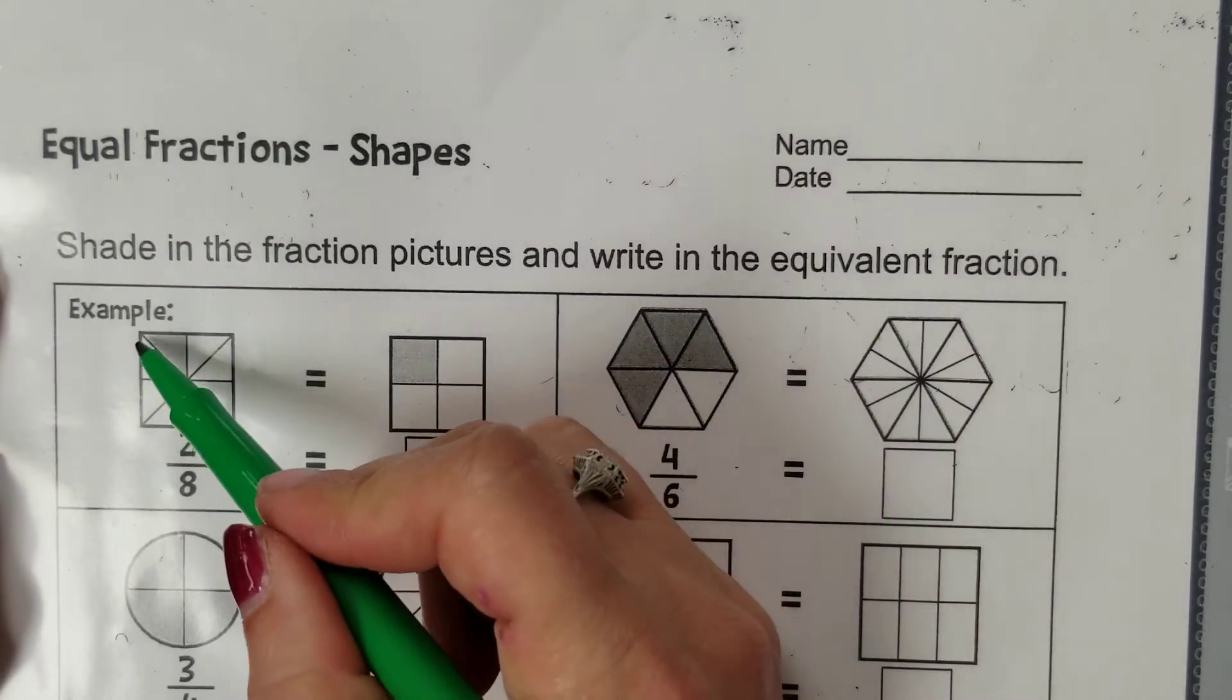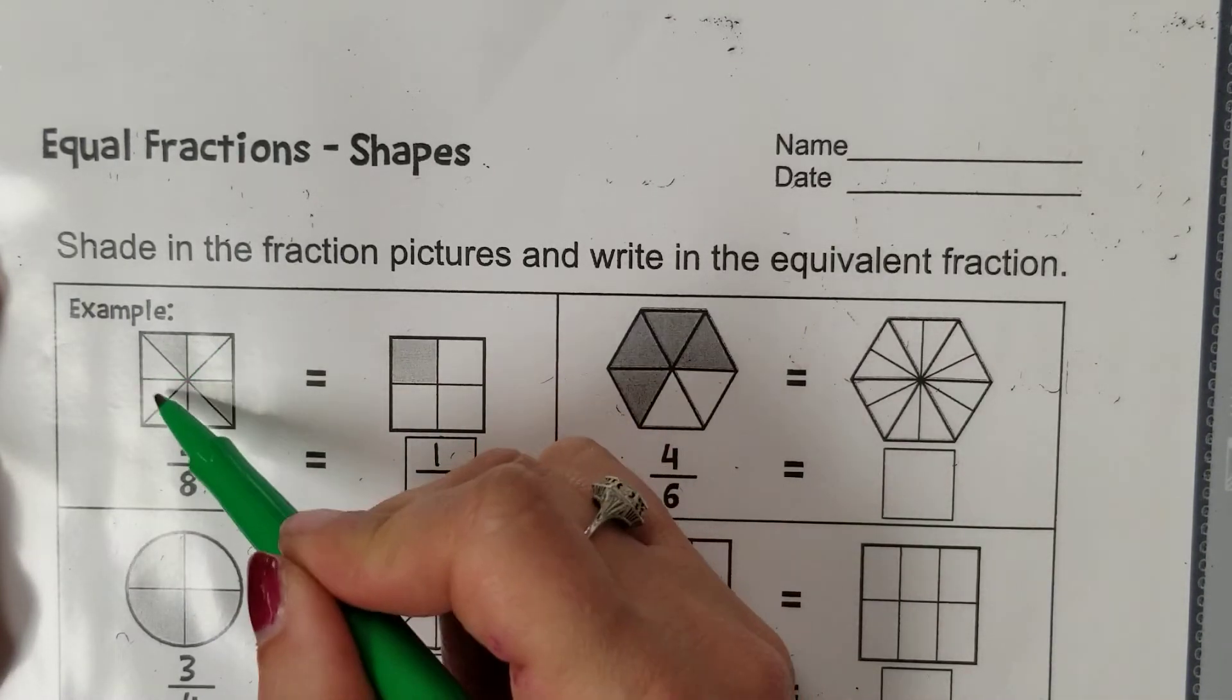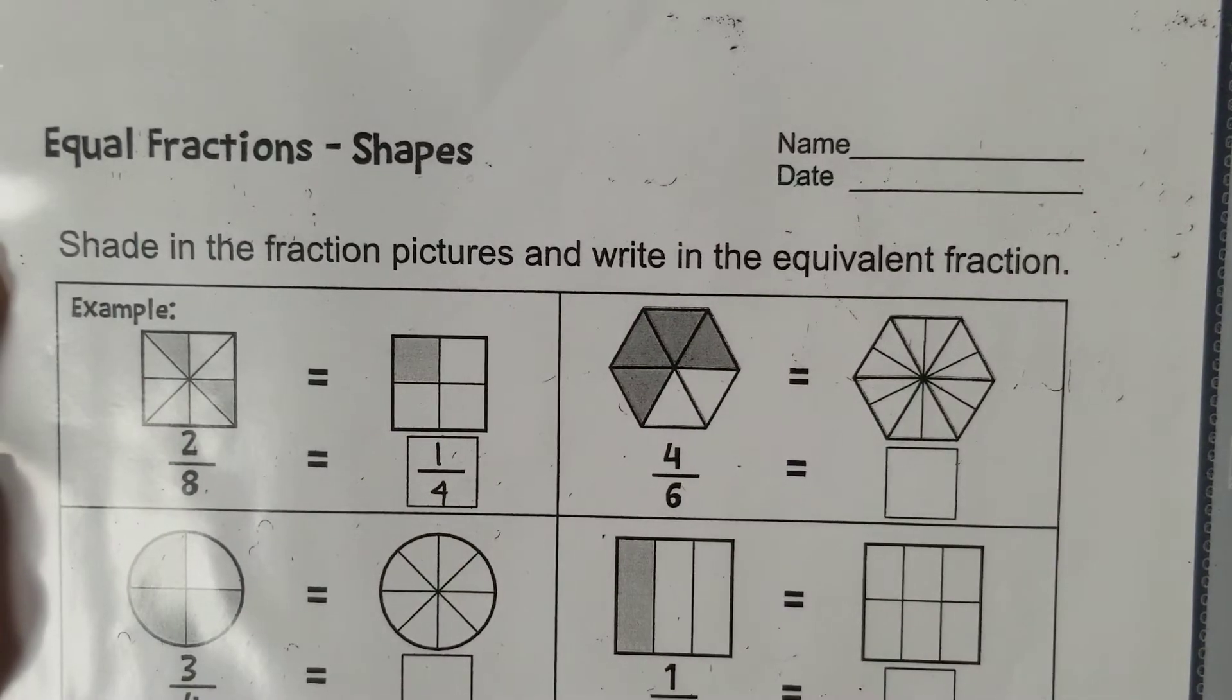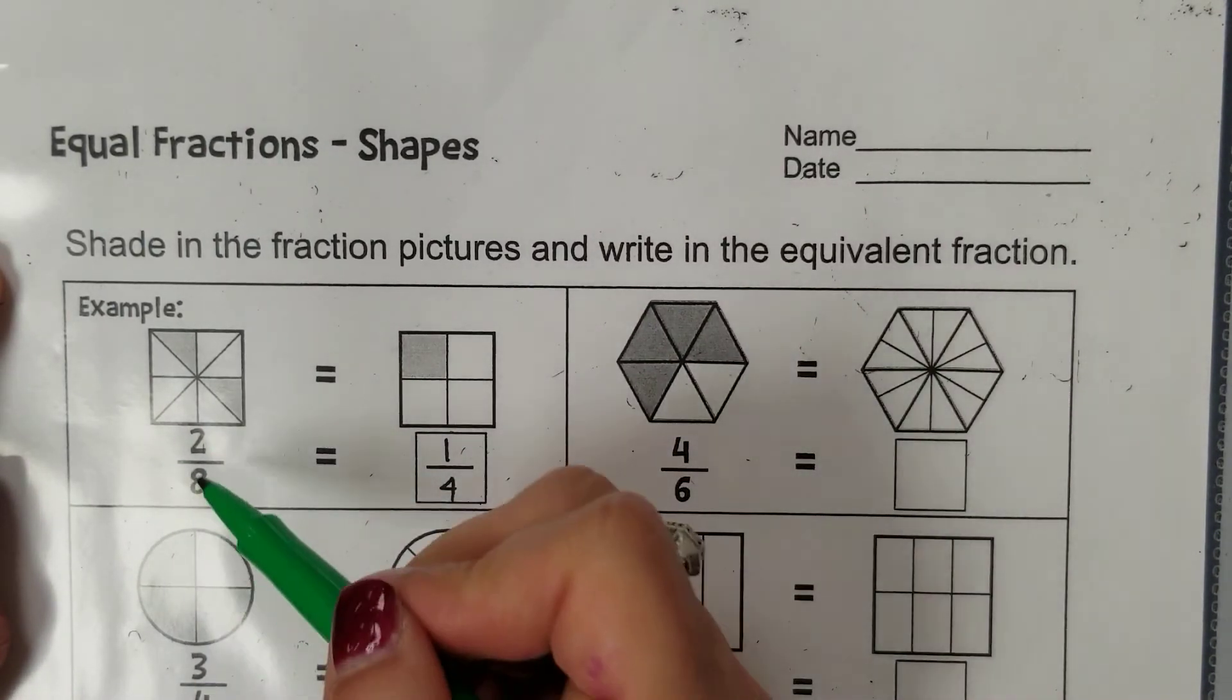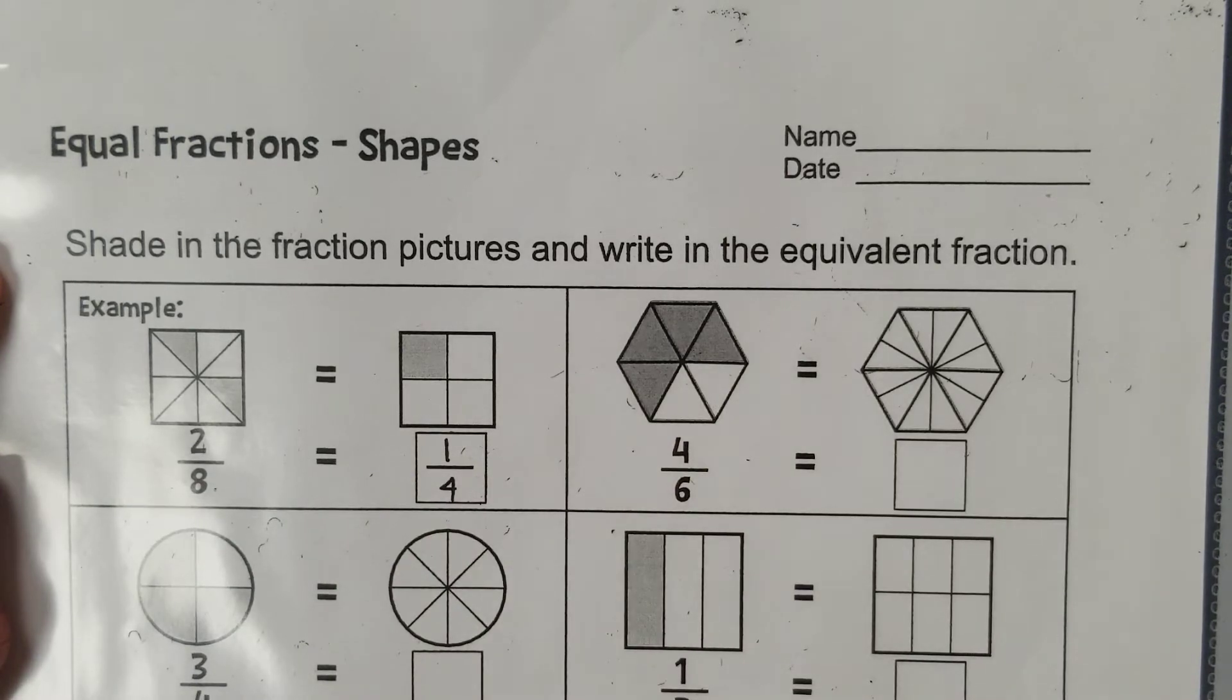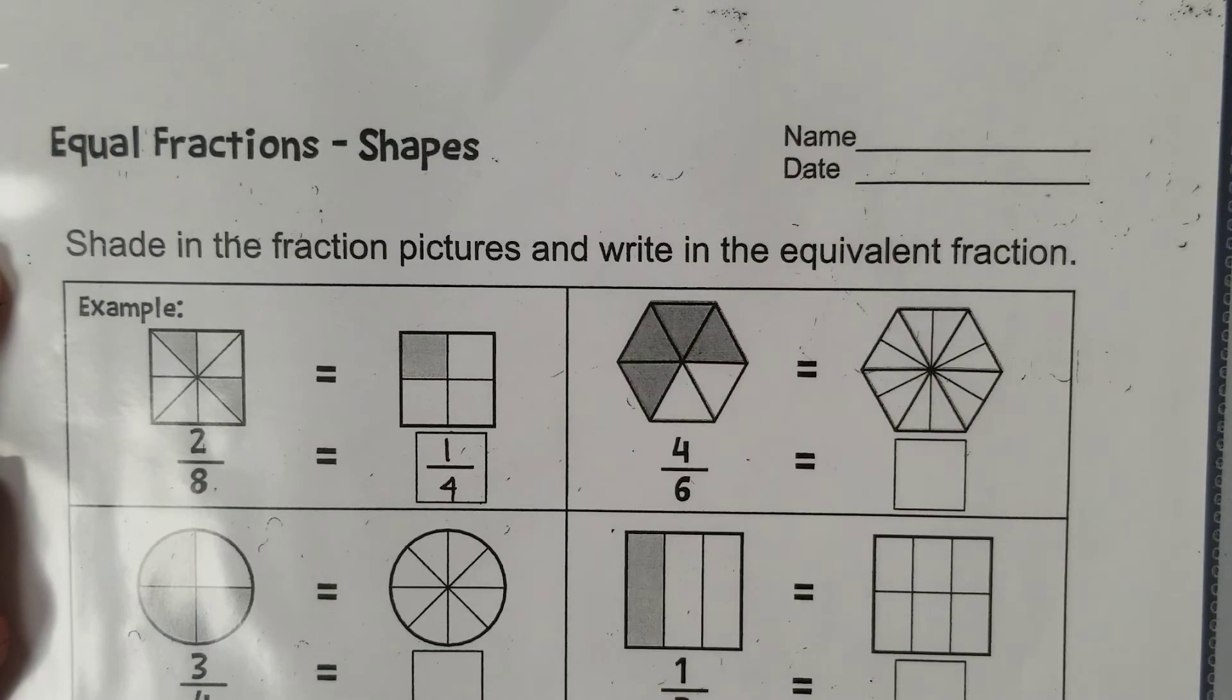So here we have a square broken up into eight equal pieces. If I count these pieces around, there are eight equal pieces that my one whole square is broken into. That's why there's an eight on my denominator. Two of those parts are shaded and that's why we have a two sitting there in the numerator.